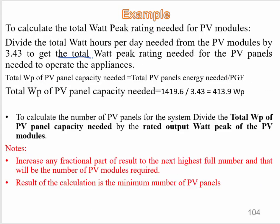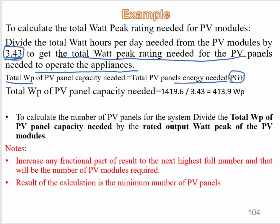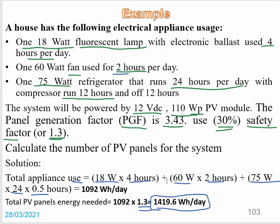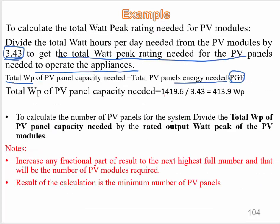Now to calculate the total watt peak rating needed for the PV panels, we apply the formula: total Wp of PV panel capacity needed equals the total PV panel energy needed divided by the panel generation factor (PGF). With PGF = 3.43 and total energy = 1419.6 Wh/day, dividing gives a final result of 413.9 watt peak.